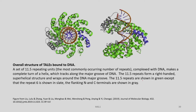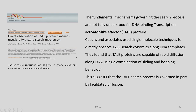The 11.5 repeats are shown in green except that repeat 6 is shown in slate; the flanking terminal regions are shown in grey. Depending on the TAL, these numbers may vary — this is just to show the interaction of the TALs with DNA. We know that they wrap around the DNA for complexation and track along the major groove of the DNA.